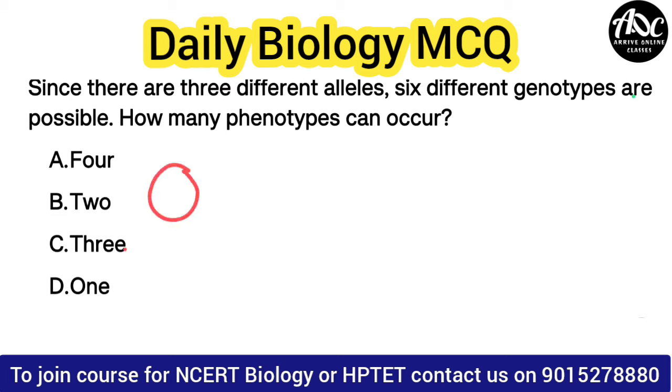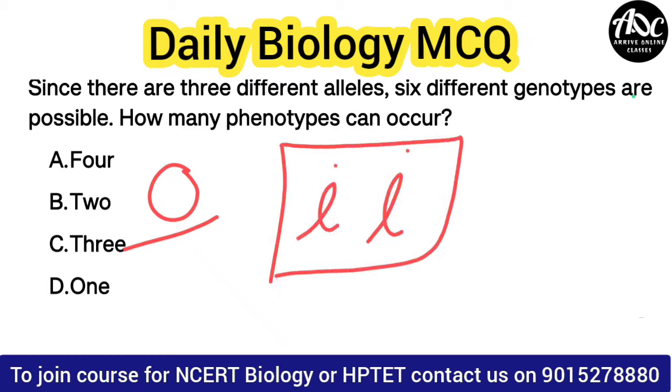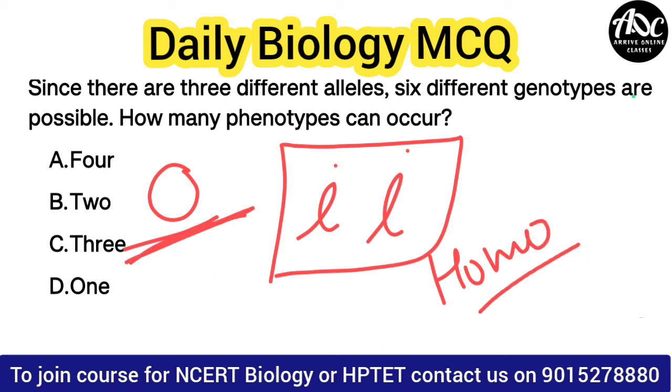For blood group O, it is small i — homozygous small i. This homozygous condition gives blood group O.